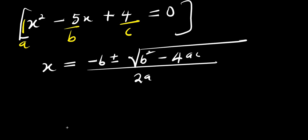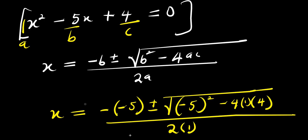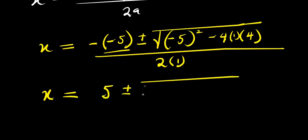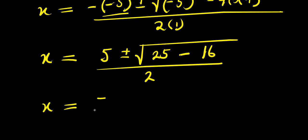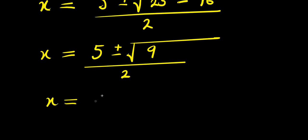Then inserting into the formula: x equals negative of negative 5, plus or minus square root of negative 5 to the power of 2 minus 4 times 1 times 4, divided by 2 times 1. So x equals 5, plus or minus square root of 25 minus 16, which is 9, divided by 2. So x equals 5 plus or minus square root of 9, and square root of 9 is 3, divided by 2.